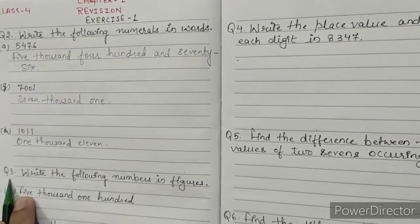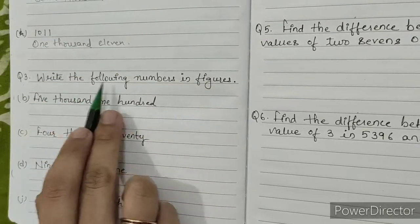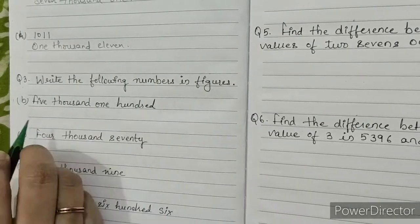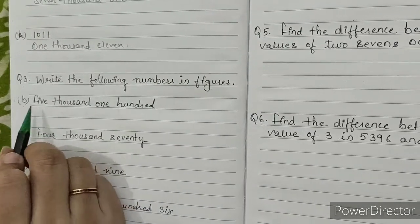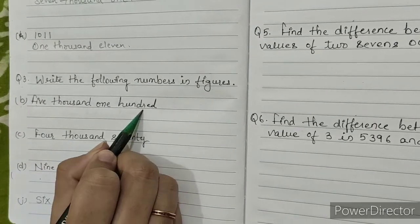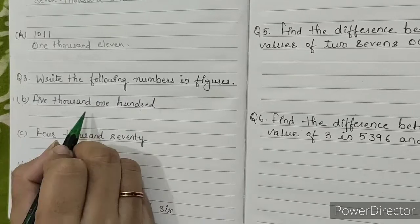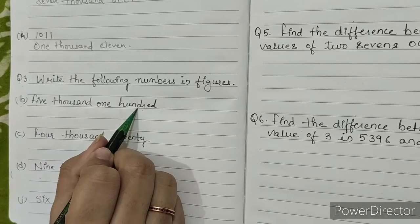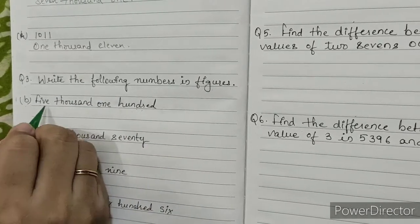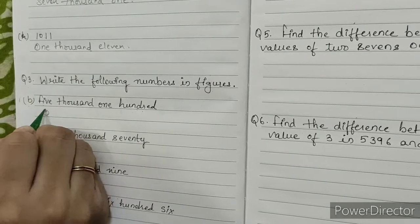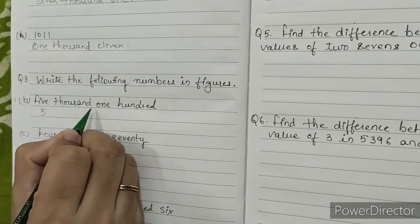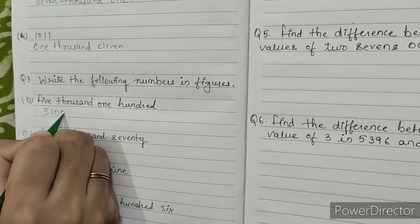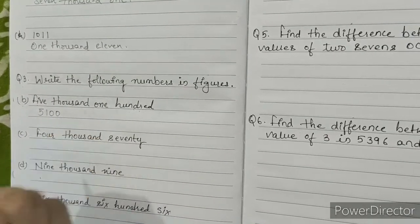Question number 3: Write the following numbers in figures. B: 5,100. We have to write 5,100 in figures. So we will write 5, 1, 0, 0. This is our answer.